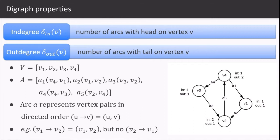In the given example, v4 has one in-degree and two out-degrees. Similarly we can count for all other vertices. An arc is represented by a vertex pair which is in directed order.